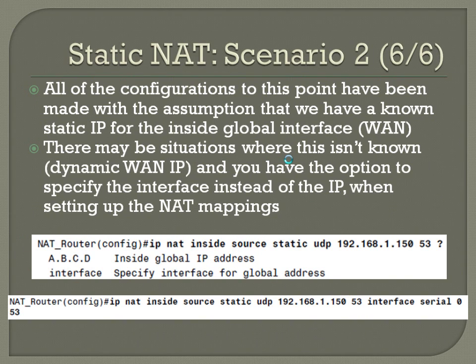All configurations so far have assumed a known static IP for the inside global interface, or the WAN. But there may be situations where this isn't known, specifically when getting a dynamic WAN IP via DHCP. You have the option to specify the interface instead of the IP when setting up NAT mappings. For example: IP NAT inside source static UDP 192.168.1.50 port 53 — instead of specifying the inside global IP, you select the interface, in this case serial zero, and then the port number 53.